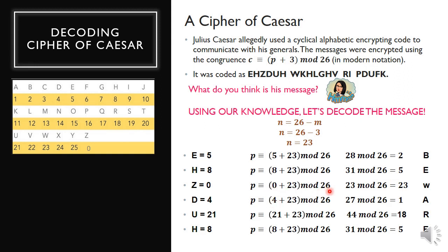21 plus 23 mod 26 is 44 mod 26, which equals 18. And 8 plus 23 mod 26 is 31 mod 26, which equals 5. So the statement is 'beware.' The rest of the message - I think you get the idea. These are the rest of the message: beware the Eid of March. This is the decoded message of Caesar: beware the Eid of March.